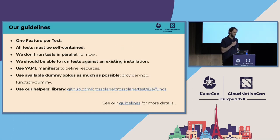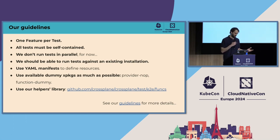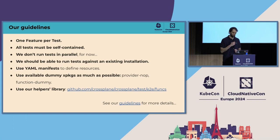We defined our guidelines. We decided to have one feature per test so that we can directly select tests using standard Go test selectors. All tests must be self-contained, ensuring Crossplane itself is installed as needed, restoring the previous state, deleting everything they created, and failing otherwise. We don't run tests in parallel — at least for now — as most Crossplane resources are cluster-scoped, making it really hard to implement parallel tests. So each test can assume it has the whole cluster available, as long as it cleans up after itself.